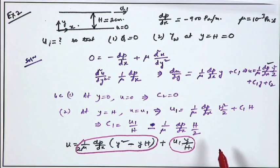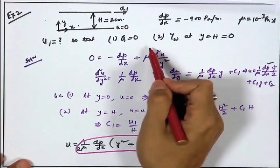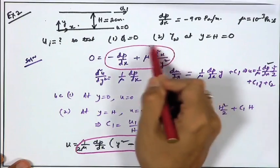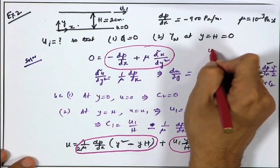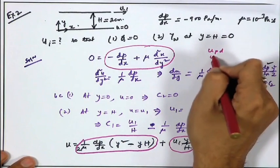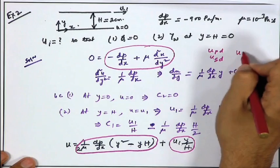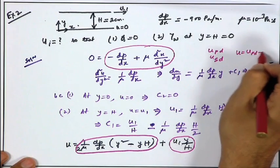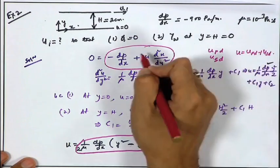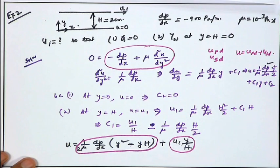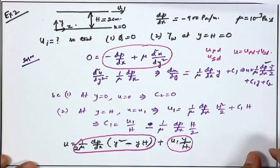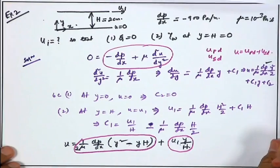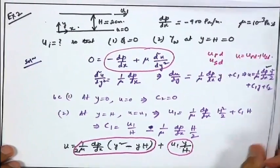The reason the result is a simple algebraic sum is that this is a linear equation. If u_pressure-driven is a solution and u_shear-driven is a solution, then their sum is also a solution. What is asked is not u itself but: if q = 0, what is u1? Let us calculate q.